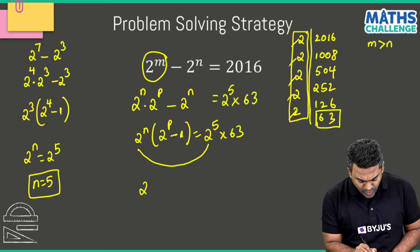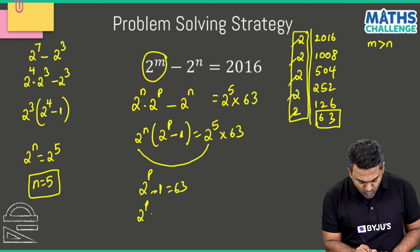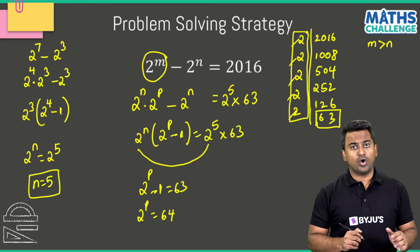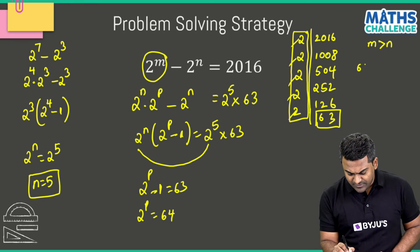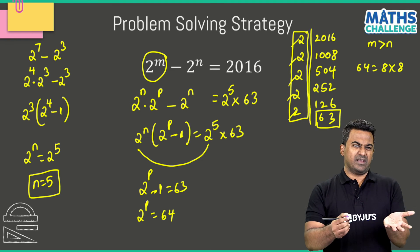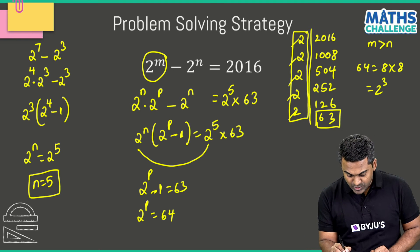And now comes the p value. So when I equate 2 to the power p minus 1 as 63, 2 power p becomes equal to 64. Now 64 we know how to write. 64, off the top of my head, can be written as 8 times 8. 8 can be written as 2 cube multiplied with 2 cube.